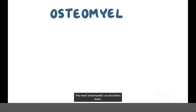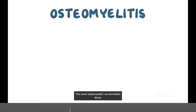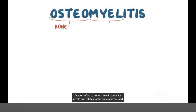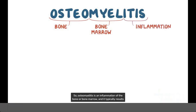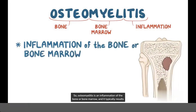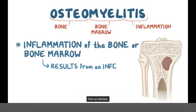The word osteomyelitis can be broken down. Osteo refers to bones, myel stands for myelo and relates to the bone marrow, and lastly itis refers to inflammation. So osteomyelitis is an inflammation of the bone or bone marrow, and it typically results from an infection.